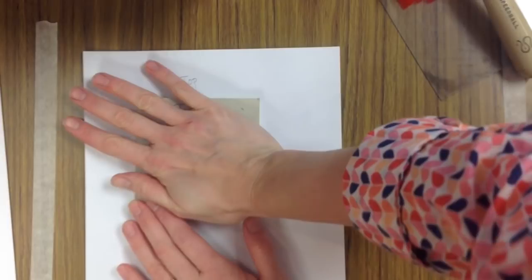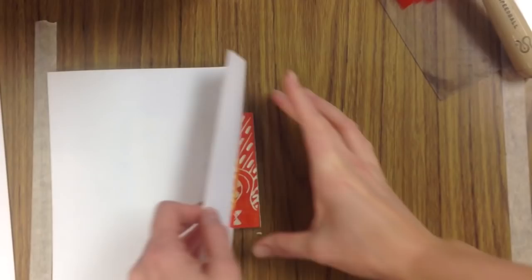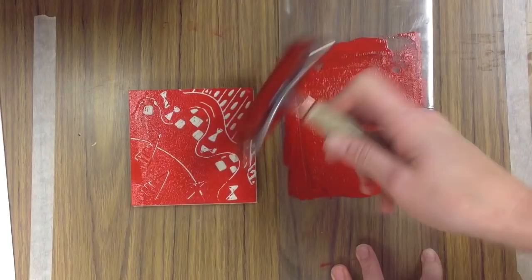Again, I like to flip my paper over and gently rub my barren on the top of that so I get that nice even print. And when I pull it off I'm now going to be able to see my white, my yellow, and my red. And I'm going to repeat that four times. Now you have to be careful.